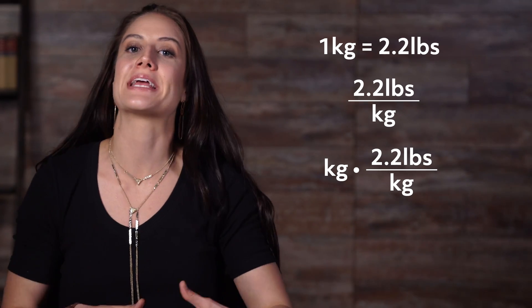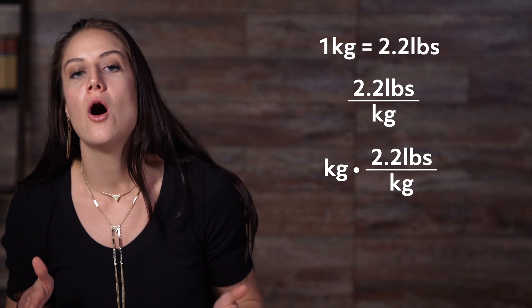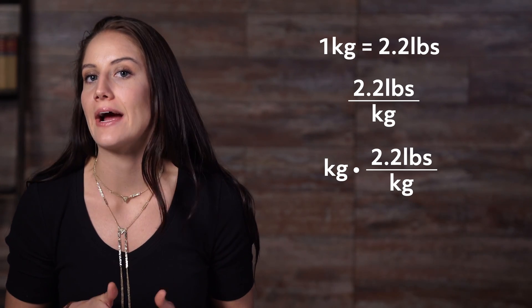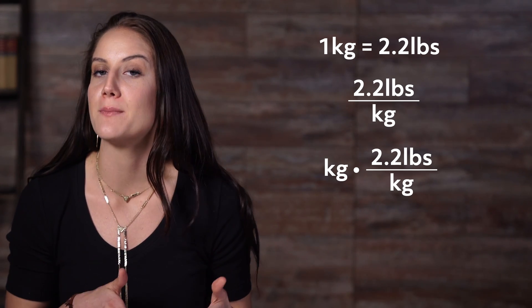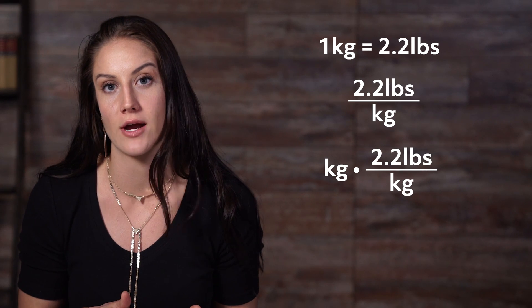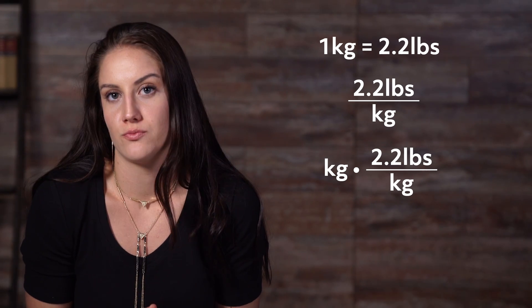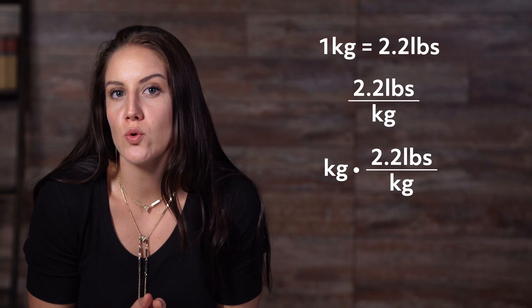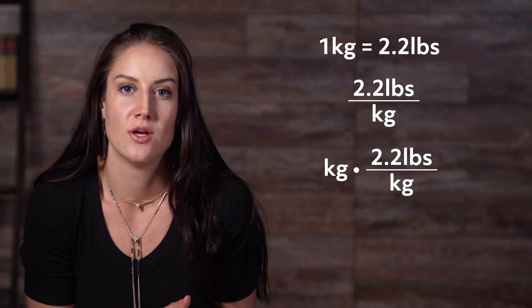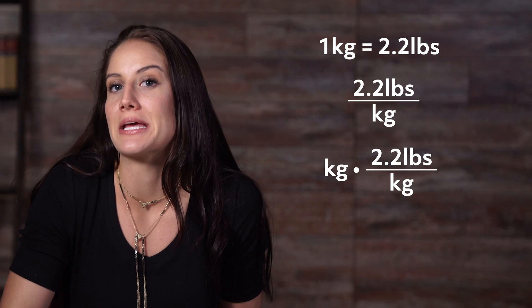So, in order to convert kilograms to pounds, all we have to do is multiply our kilograms by 2.2 pounds over kilograms. Now, here is something that is important to know. If you were to just multiply your kilograms by 2.2, then your units would still be in kilograms.